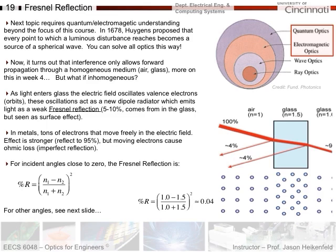A metal surface is much more reflective than glass because metals have a ton of electrons that move very easily with electric field. A photon's oscillating electric field causes the electrons to oscillate, which re-emits photons — and since moving electrons create a time-varying electric and magnetic field, you get a large reflection back. Metals can reflect as much as 95%, whereas glass only gives a small reflection because it's just the electron orbitals moving slightly, like a rubber band.